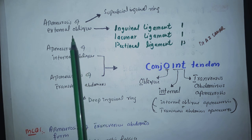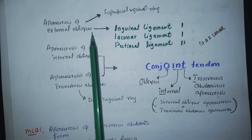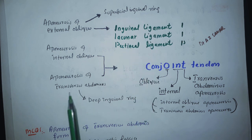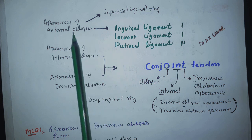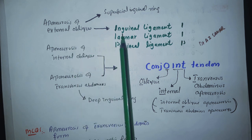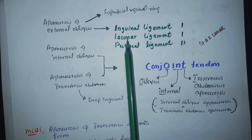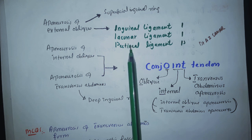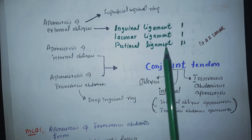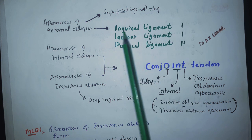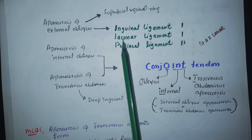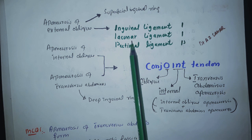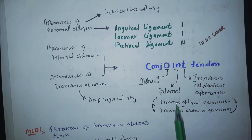To summarize all the aponeuroses: the aponeurosis of the external oblique forms the superficial inguinal ring; the aponeurosis of the transversus abdominis forms the deep inguinal ring; the external oblique aponeurosis also forms the inguinal ligament, which then forms the lacunar ligament, and the lacunar ligament forms the pectineal ligament. Remember: inguinal and lacunar both relate visually — 'I' and 'L' look alike.